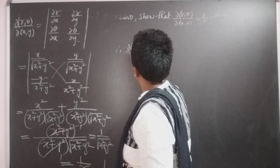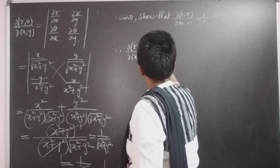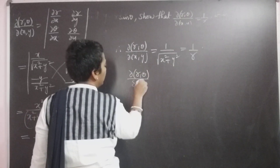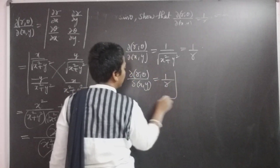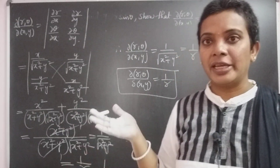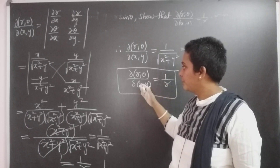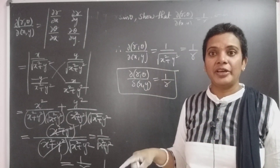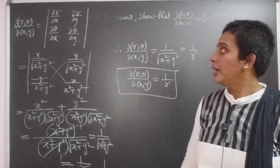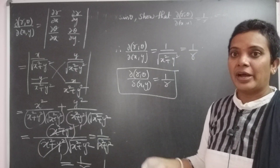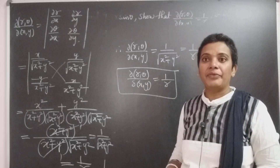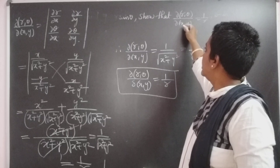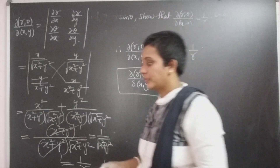Therefore ∂(r,θ)/∂(x,y) equal to 1/√(x²+y²), which is clearly equal to 1/r, because r equal to √(x²+y²). So ∂(r,θ)/∂(x,y) equal to 1/r. In this Jacobian, the given functions are in x and y, but the x and y functions can be converted into r and theta variables, because r and theta are independent of x and y. We find r and theta, differentiate with respect to x and y, substitute into the Jacobian, and obtain the given relation.